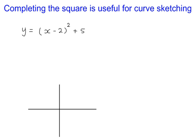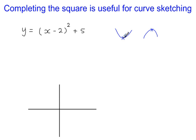Completing the square is useful for curve sketching. If you have a U-shaped curve, the completed square form is very useful for working out the coordinates for the vertex. Similarly for an N-shaped curve. Working out the equation for the line of symmetry — which is just a vertical line through the vertex — is also simple once you have the completed square form.